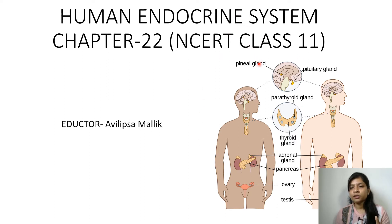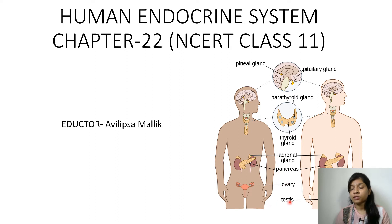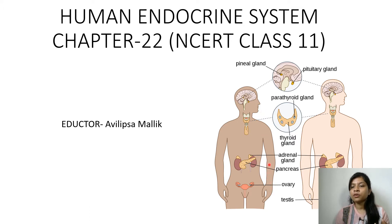There are various kinds of glands known as endocrine glands, which collectively constitute the endocrine system of the human body. These are the pineal, pituitary, parathyroid, thyroid, adrenal, pancreas, ovary, and testes — which may be present in male or female bodies. These are some examples of endocrine glands.